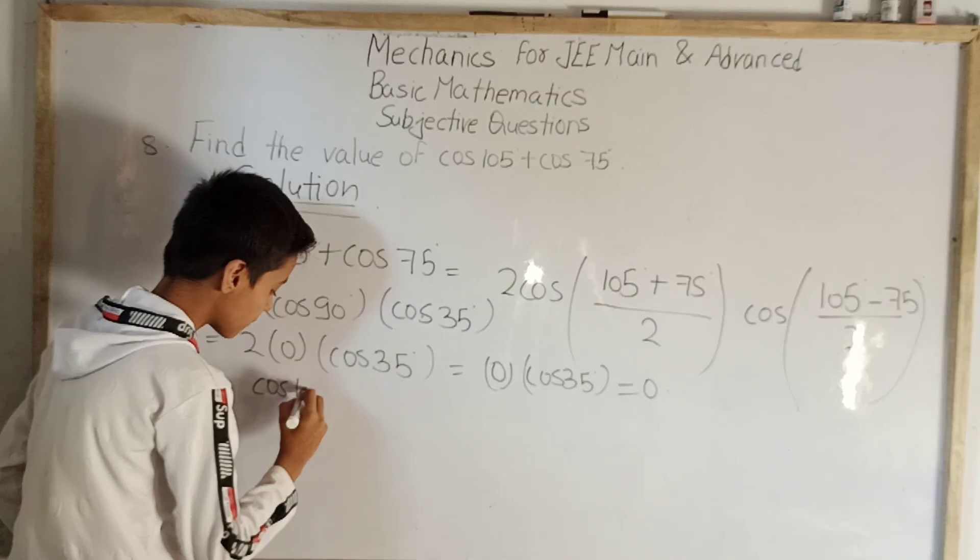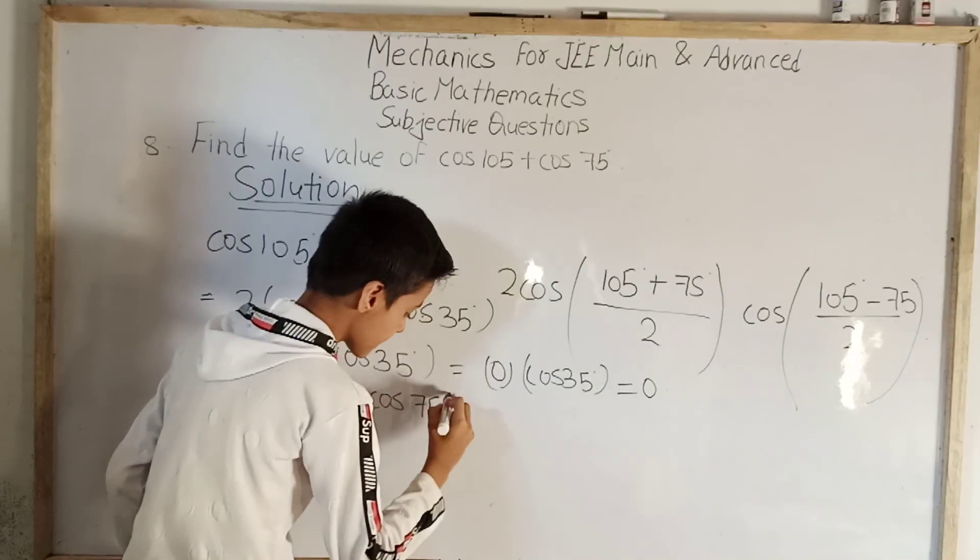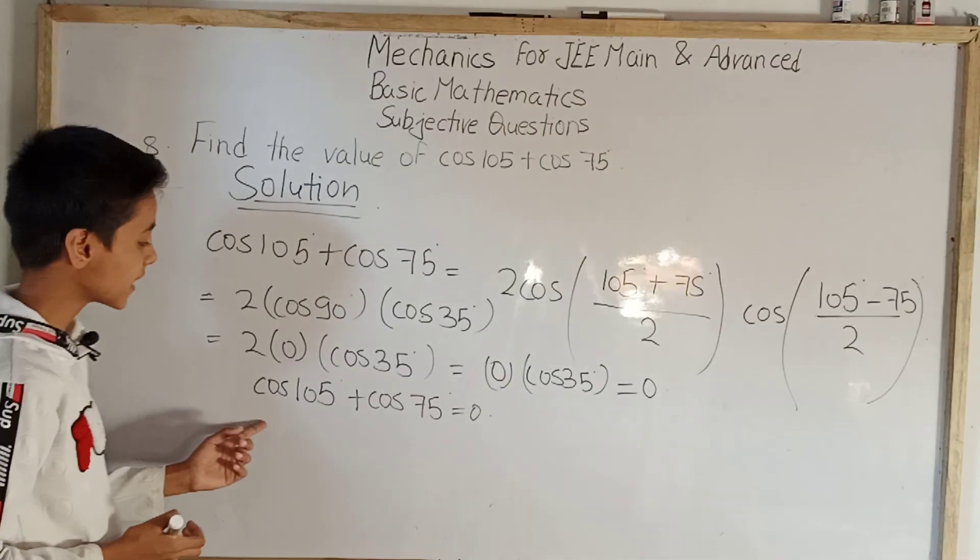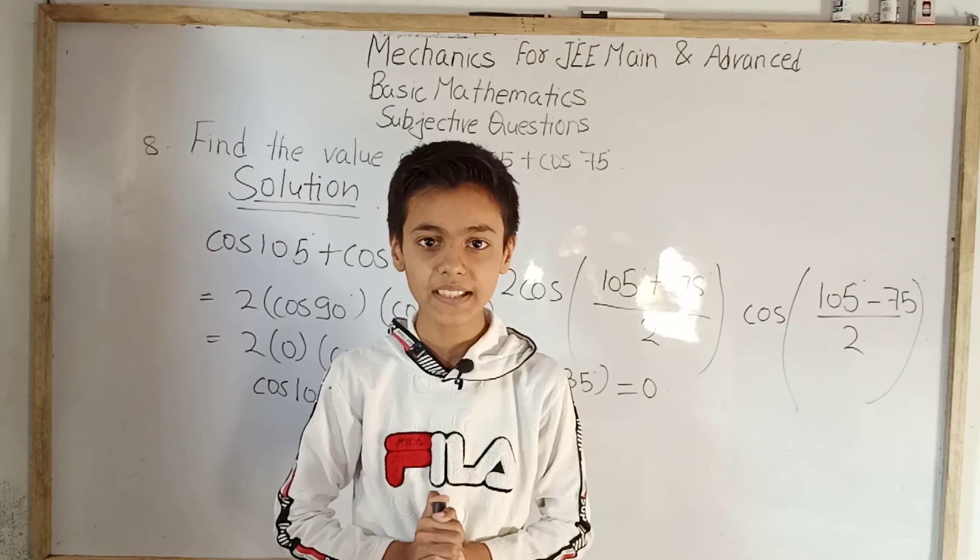Cos 105 degree plus cos 75 degree is equal to 0. So this is the final answer: cos 105 degree plus cos 75 degree equals to 0. This was my today's topic. Thank you.